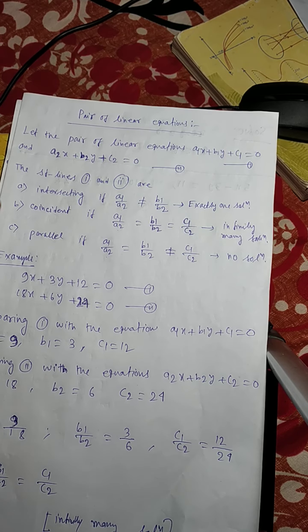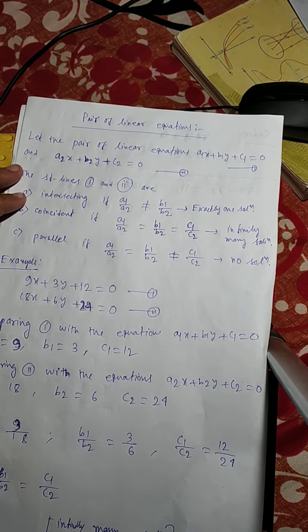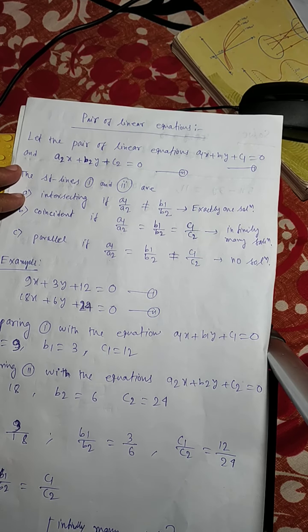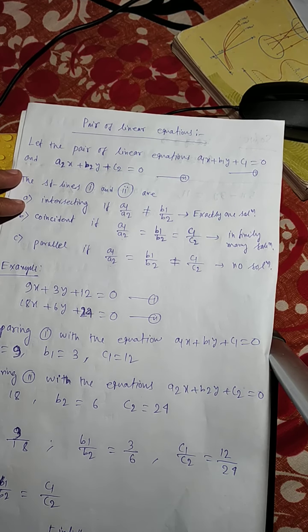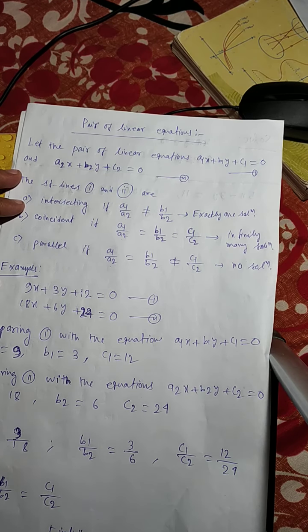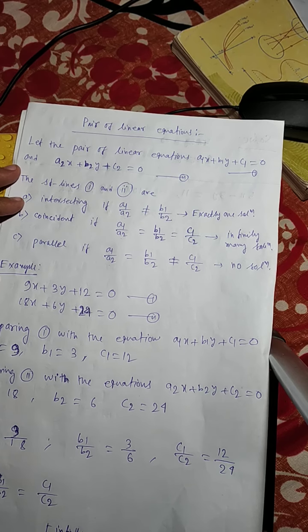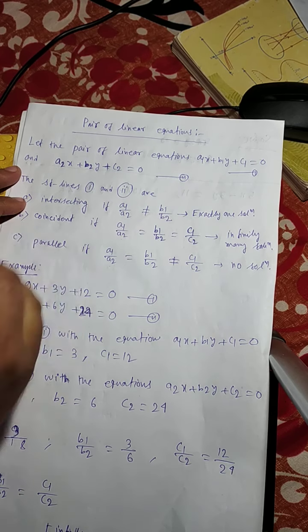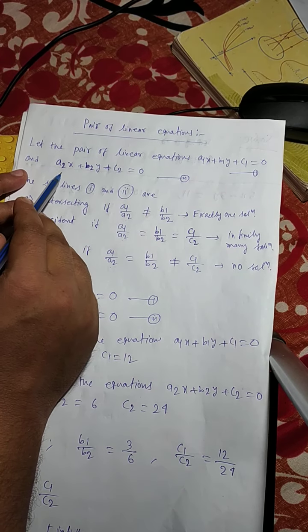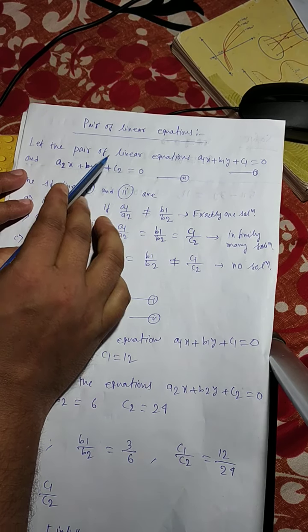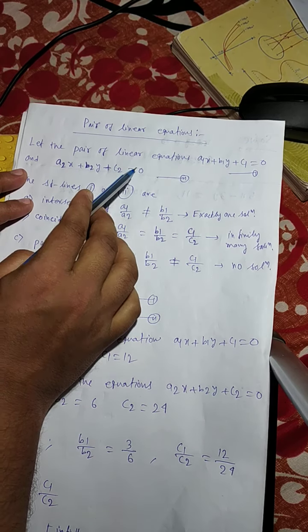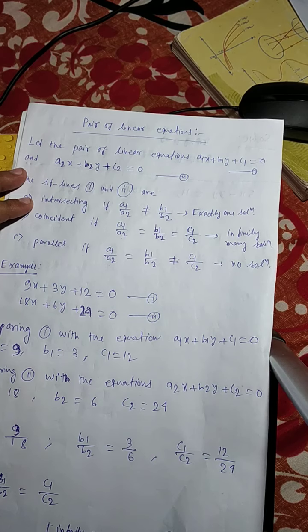Let the pair of linear equations be: a1x plus b1y plus c1 equals to 0 — this is equation number 1 — and a2x plus b2y plus c2 equals to 0 — this is equation number 2.